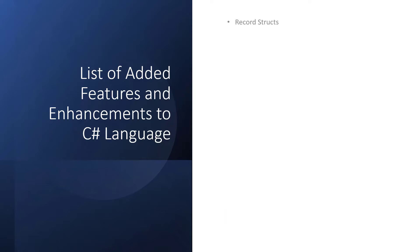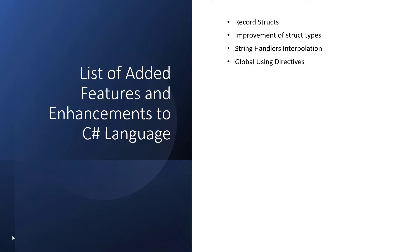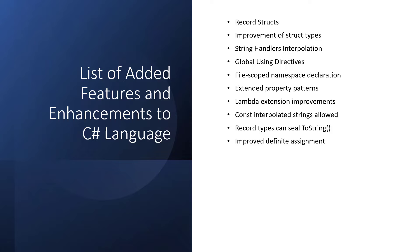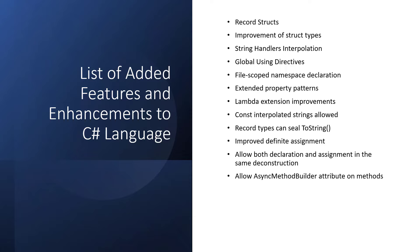These are the list of all the added features and enhancements to the C# language: record structs, improvement of struct types, string handlers, interpolation, global using directives, file-scope namespace declaration, extended property patterns, lambda expression improvements, constant interpolated strings allowed, record types can seal ToString, improved definite assignment, allow both declaration and assignment in the same deconstruction, allow async method builder attribute on methods, caller argument expression attribute, and finally enhanced line pragma.